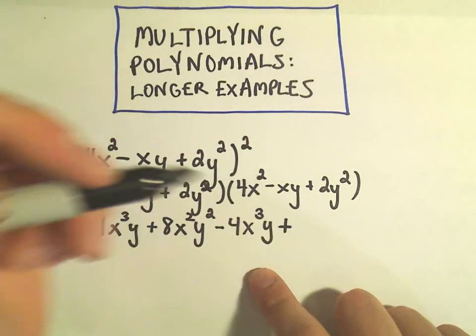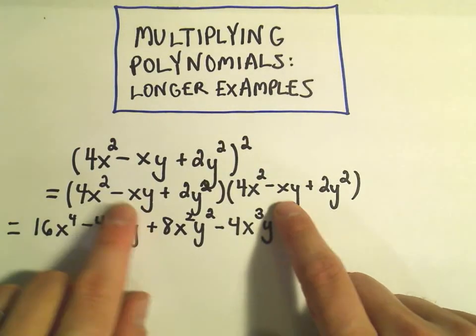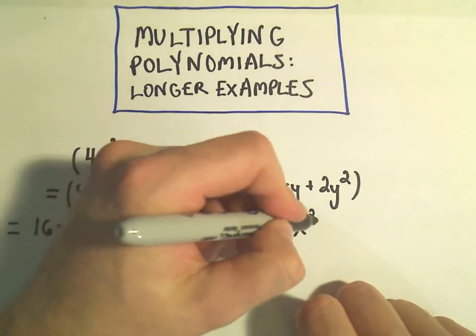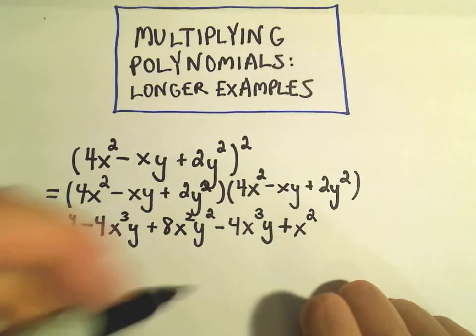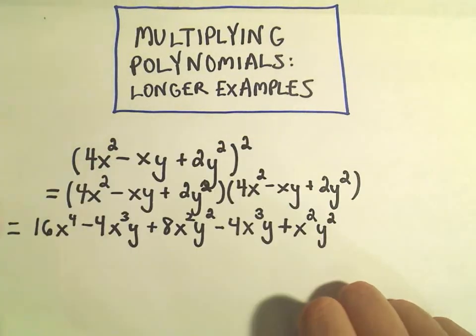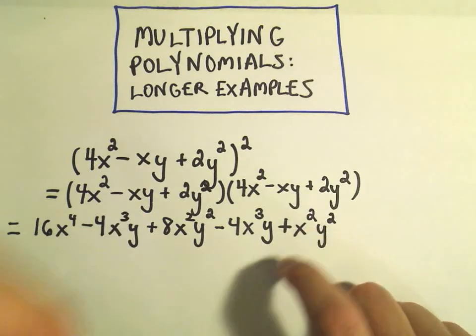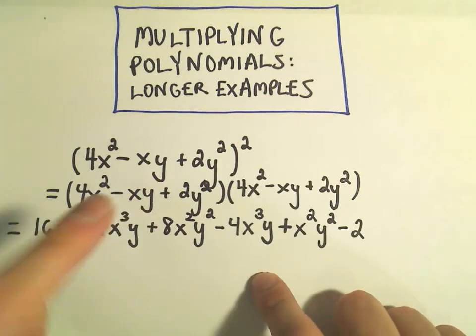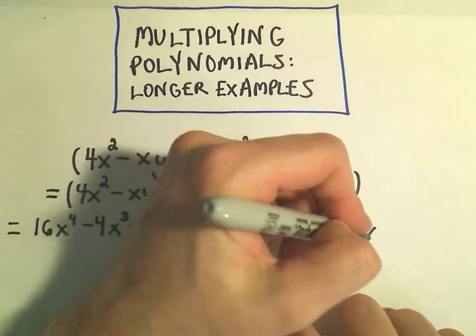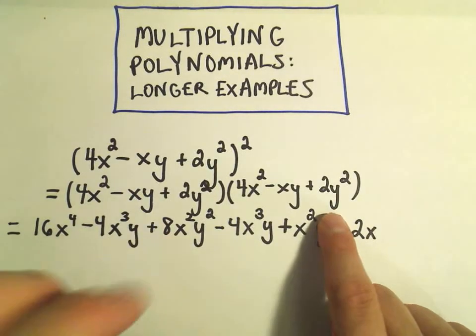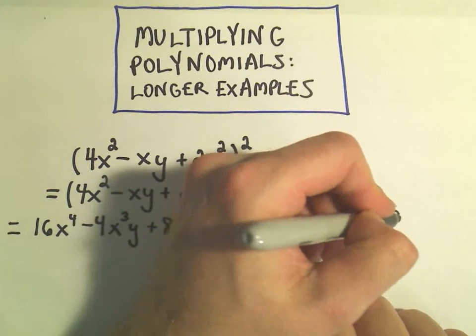x to the first and x to the first will be x to the second. y to the first and y to the first will be y to the second. And then we have negative xy times positive 2y². That'll be negative 2. We've got an x to the first. And y times y² will be y cubed.